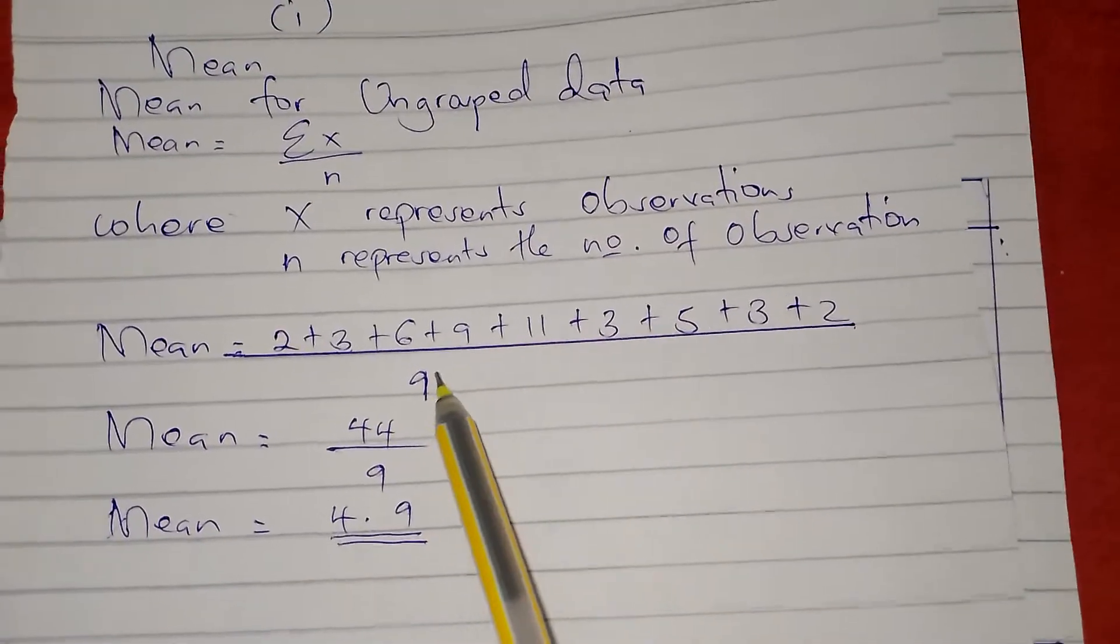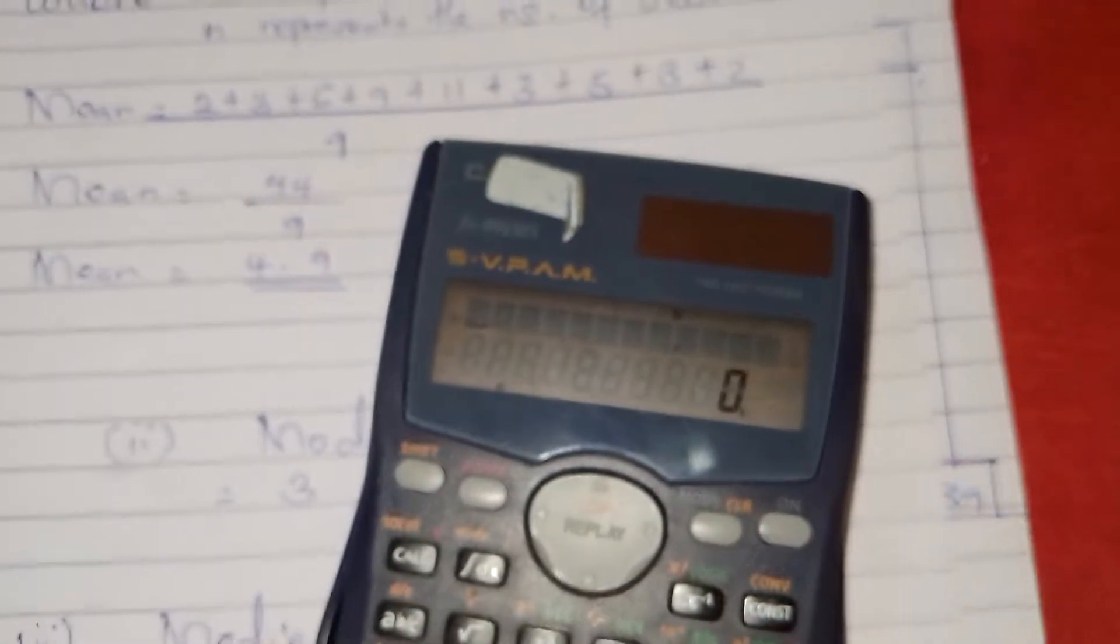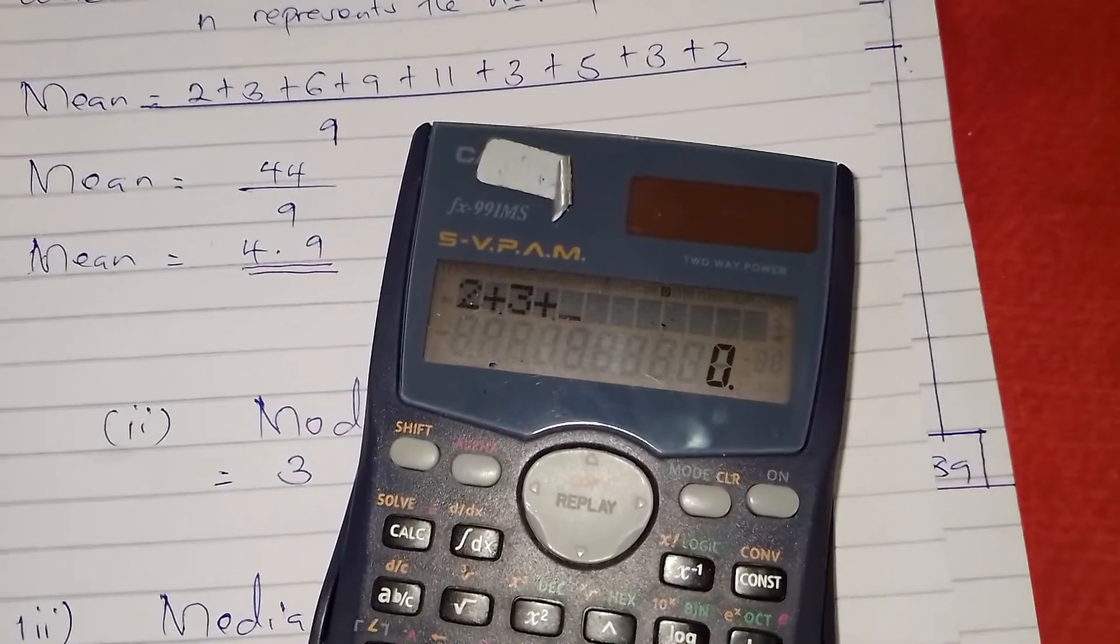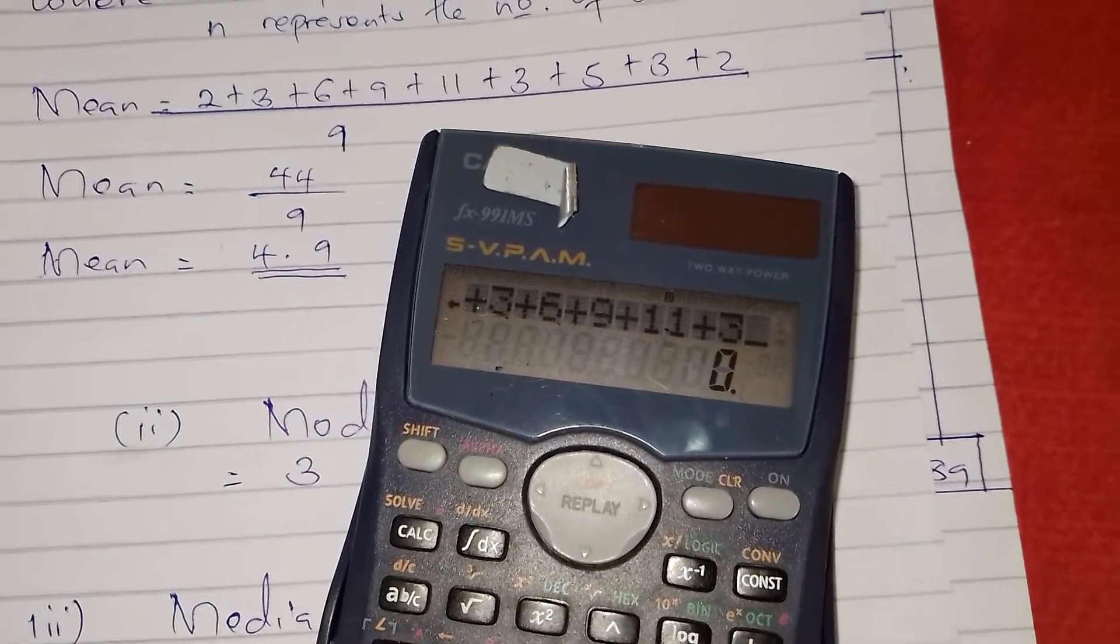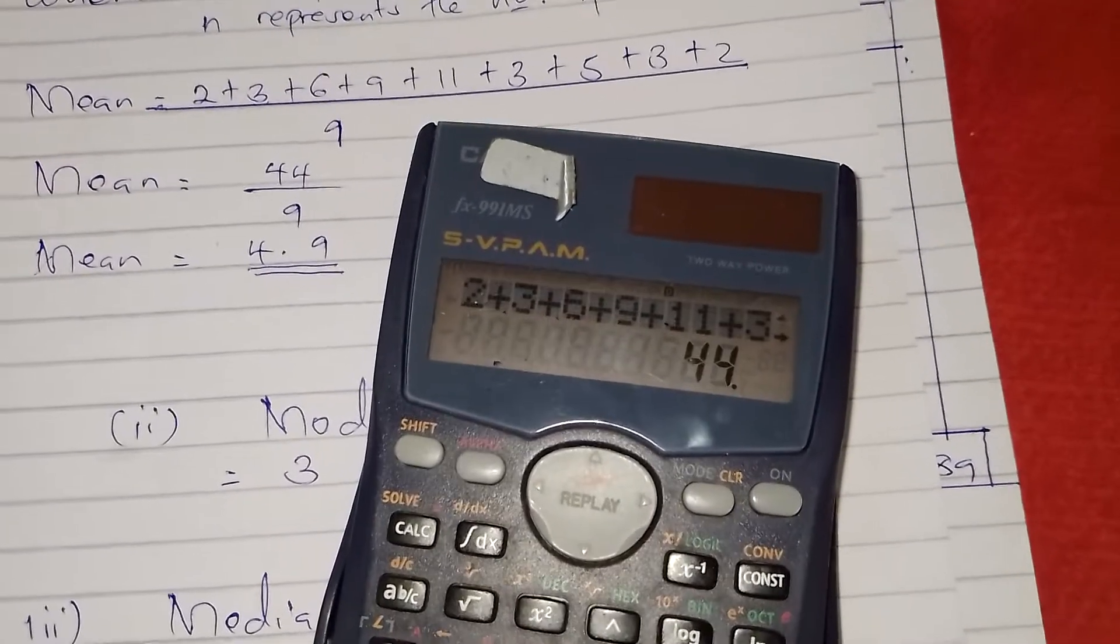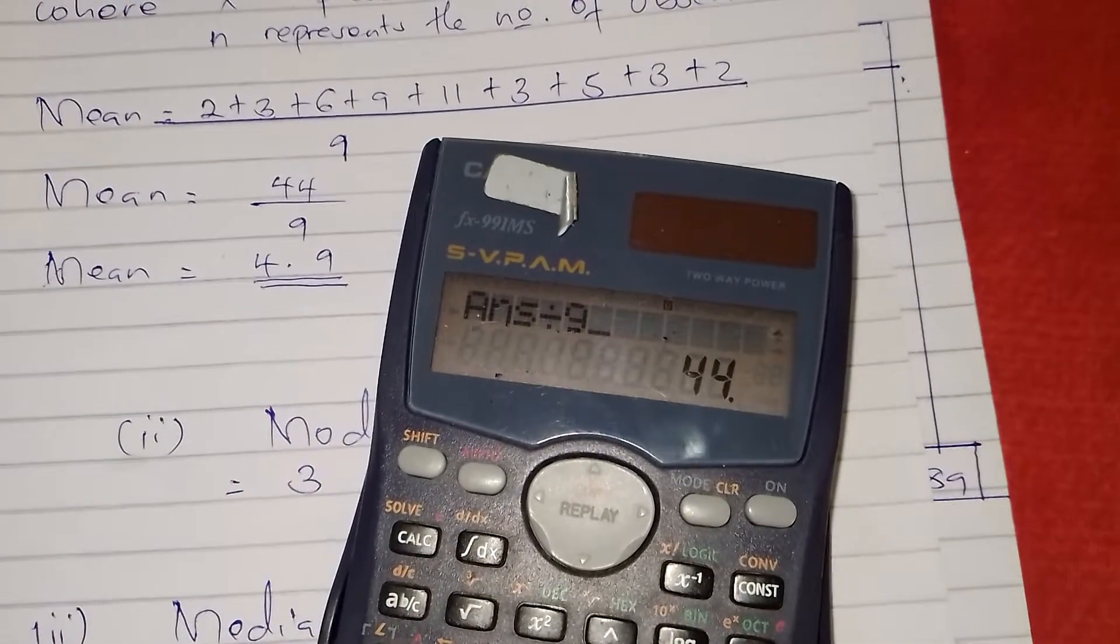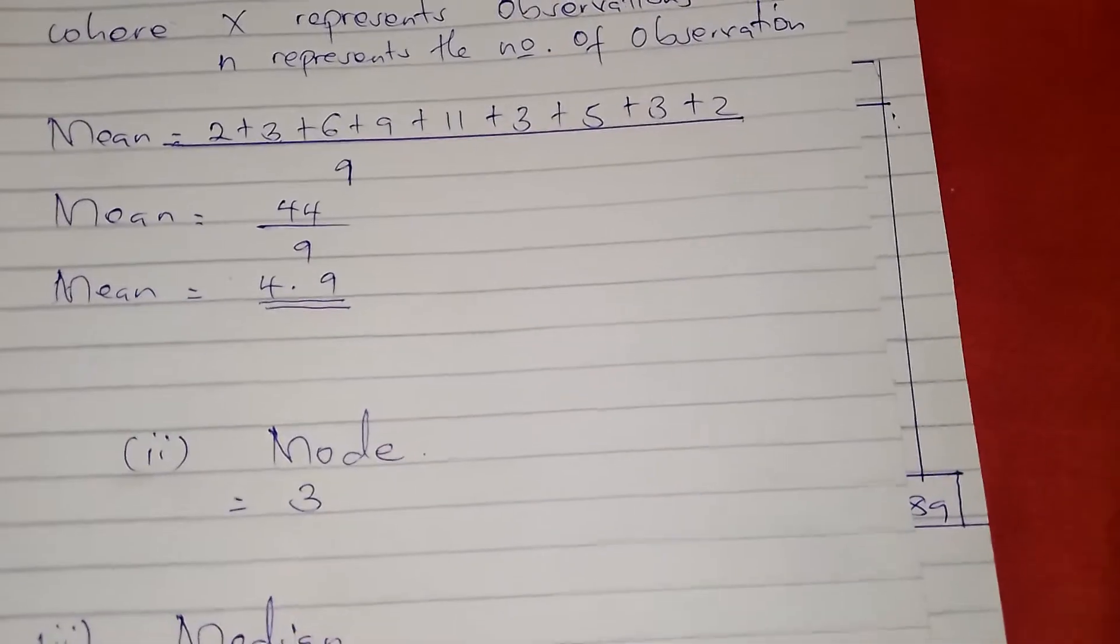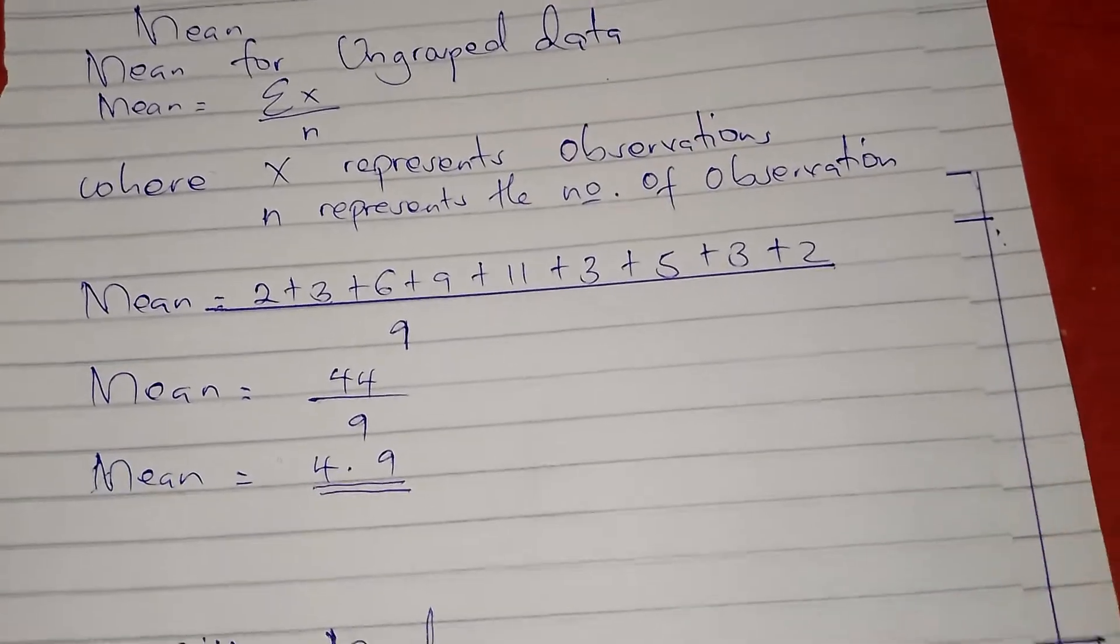If we add on the calculator, we put in 2 plus 3 plus 6 plus 9 plus 11 plus 3 plus 5 plus 3 plus 2, we get 44. Then we divide by 9, we get 4.888. If we round off, we get 4.9. So our mean for this ungrouped data is 4.9.